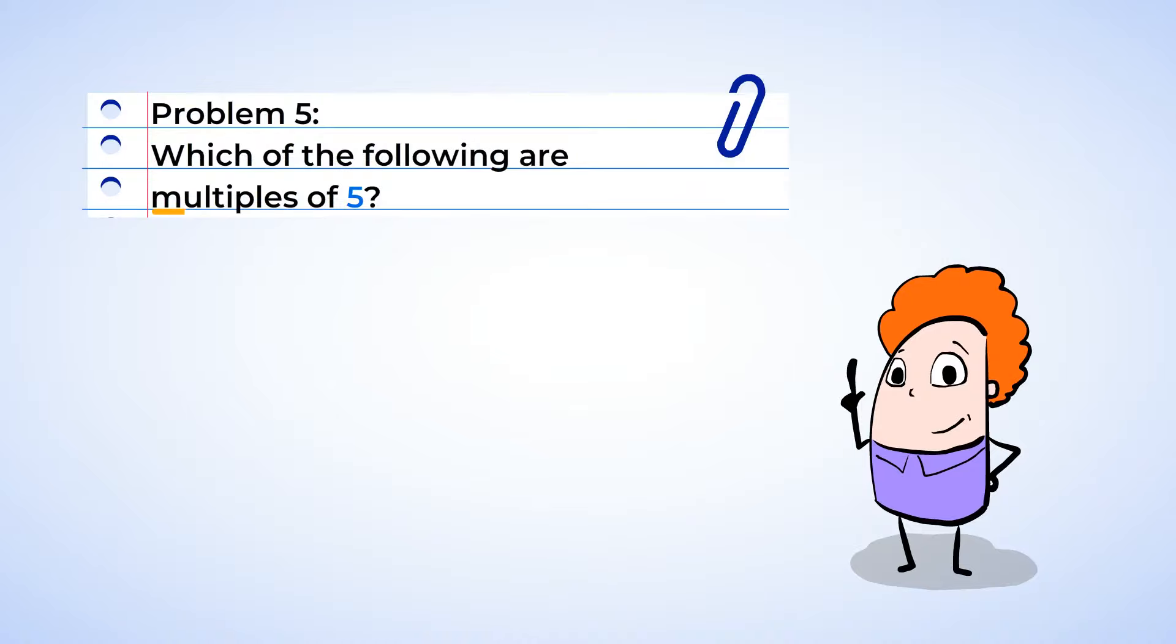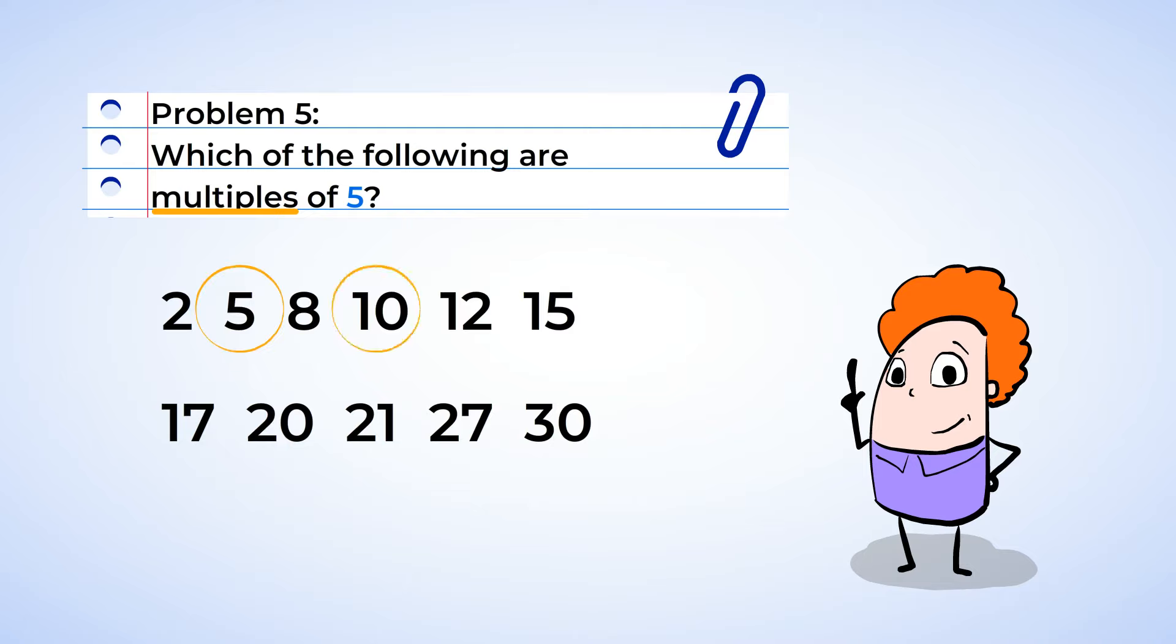Okay, the last problem. We need to find the multiples of 5. Well, that shouldn't be too tough. We can just skip count by 5. So let's circle the numbers that are multiples of 5. Okay, so we are starting with 5. So let's circle 5. Now, 5, 10, 15, 20, 25, 30. Ah, there you go. Looks like we found all of the multiples of 5.